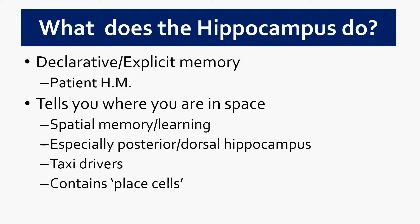The hippocampus does this through what we call place cells — specific neurons or groups of neurons that fire when you are in a particular place. Wherever you are now — at home or in the library — you have place cells firing to tell you where you are. When you move to a different room, different sets of place cells fire to tell you that you're now in a slightly different place.